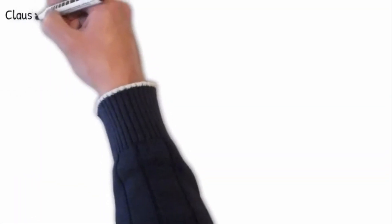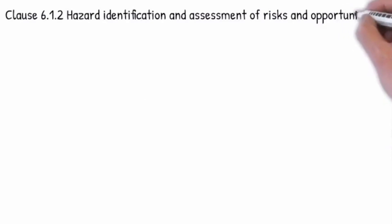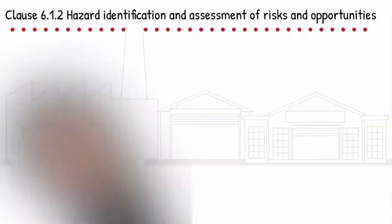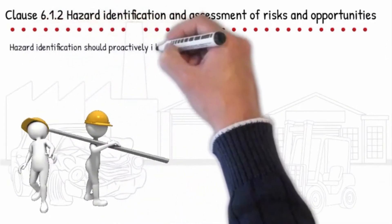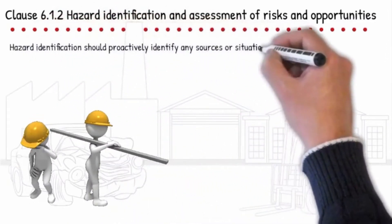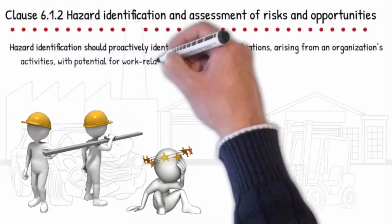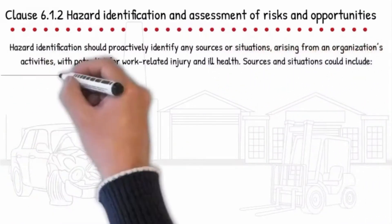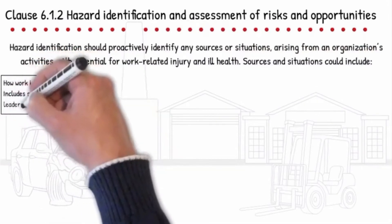Clause 6.1.2 Hazard Identification and Assessment of Risk and Opportunities. Whether you are a start-up company or an established business, there are some simple steps you can take to implement a safety system. Hazard identification should proactively identify any sources or situations arising from an organization's activities with potential for work-related injury and ill health. Sources and situations could include how work is organized, including social factors, leadership and culture.